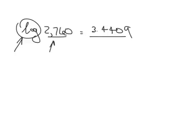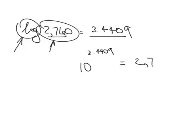So what that means is 10 to the 3.4409 power is going to equal 2,760. So 10 to this power. So you can get a decimal for your exponent. And again, all you're looking for when you're looking for the log of a number is the exponent when that exponent is put on this base. And most of the time, your base is going to be a 10.